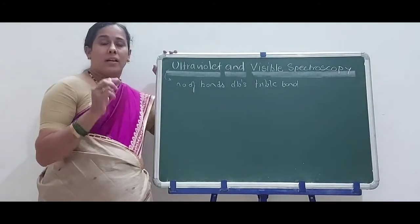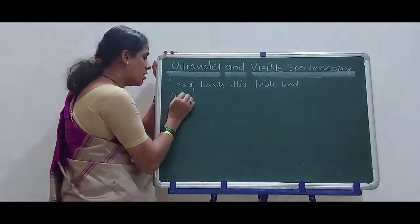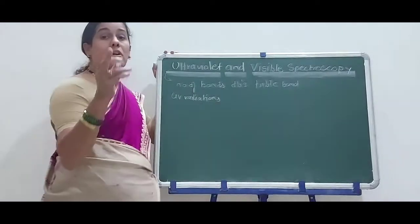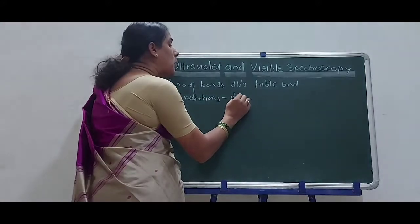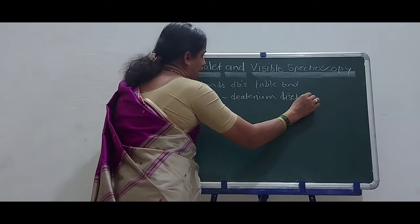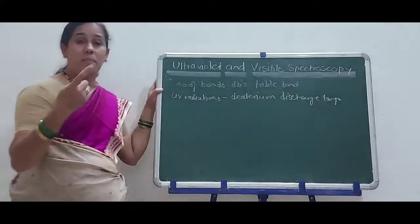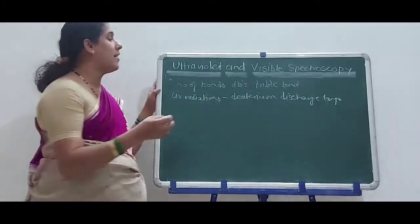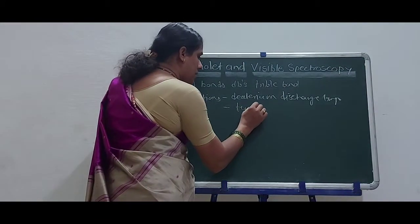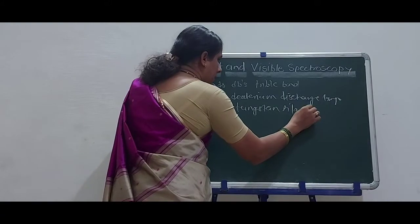We will see this spectroscopy in detail. UV radiations are produced by a deuterium discharge lamp, while visible radiations are obtained from a tungsten filament lamp.